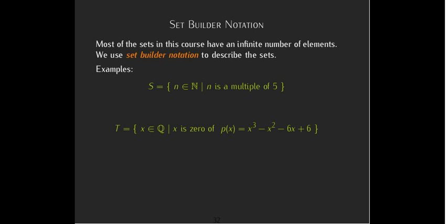So that gives us a good chance to review what is the zero of a polynomial. Well, those are the values of x, which make the value of the polynomial equal to zero. So, in other words, the rational t consists of all rational solutions to the polynomial equation x cubed minus x squared minus 6x plus 6 equals zero. Or that's p of x equals to zero.